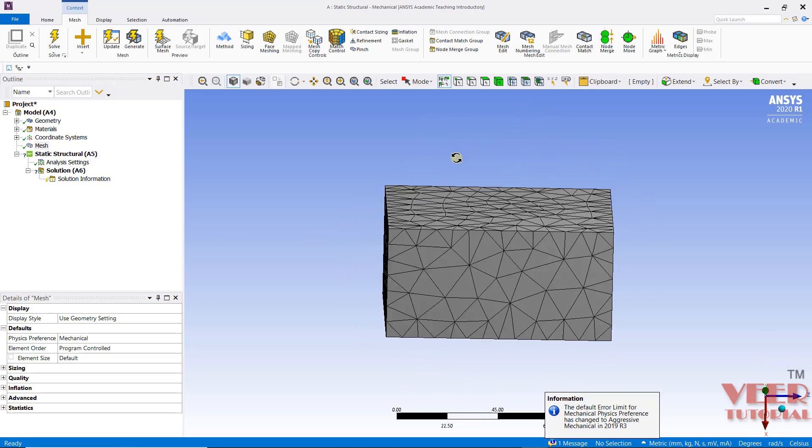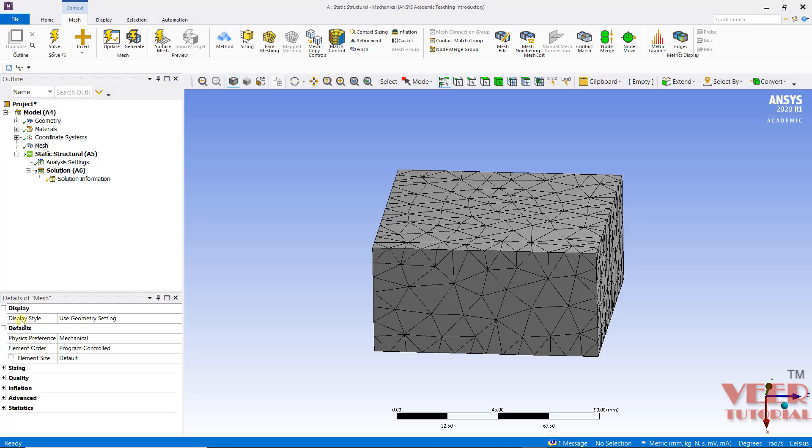here we can see an option that is called display style. Now inside the display style, it is by default use geometry settings. So if I click on this and then click on this arrow, we can change this with respect to the element quality. So first is element quality, aspect ratio,